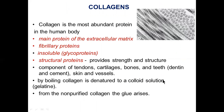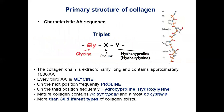Collagen is the main protein of the extracellular matrix. It is a fibrillar protein and an insoluble glycoprotein that provides strength and structural support to tendons, cartilage, bone, skin, and blood vessels. The collagen chain is extraordinarily long and contains approximately 1,000 amino acids.